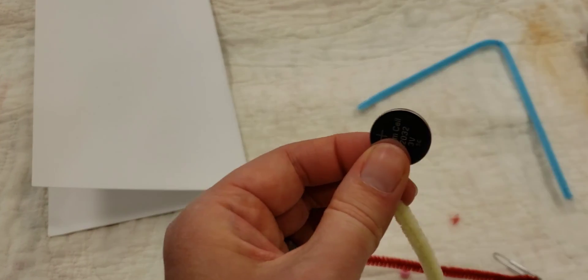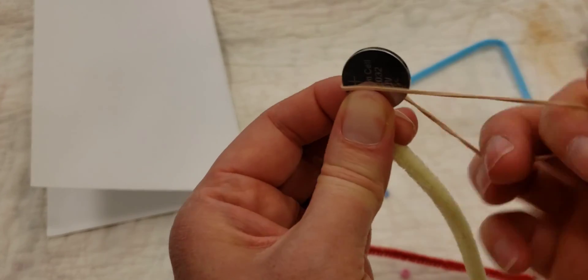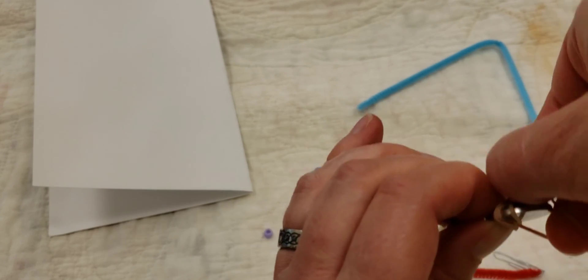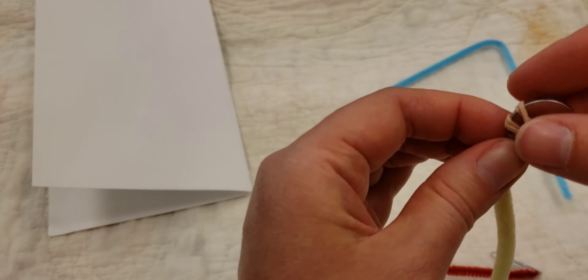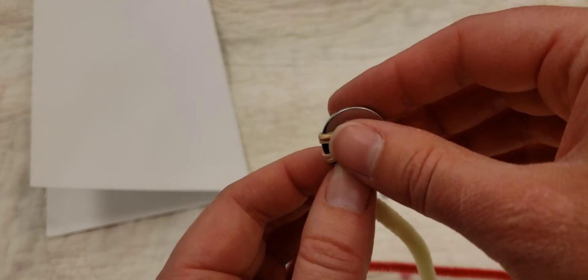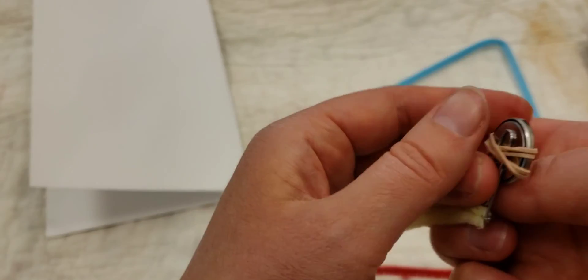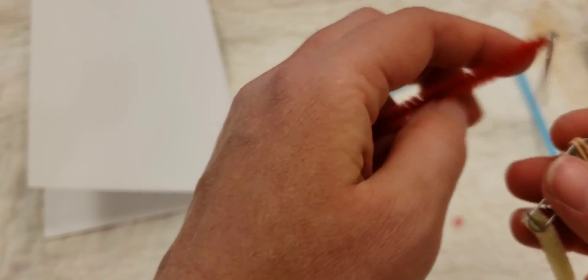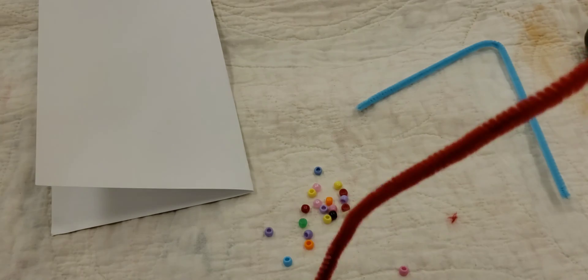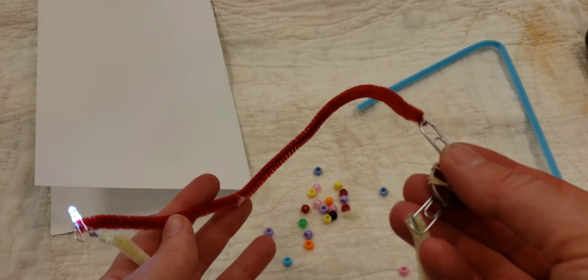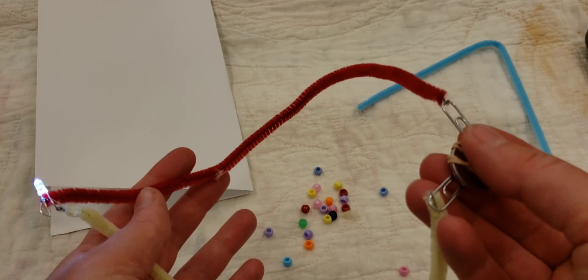Take one of those sides and rubber band it together here. So it's rubber banded onto your battery. Looks like that. And now you should have a circuit. There we are. So you have the circuit part now.